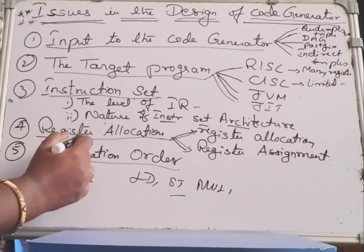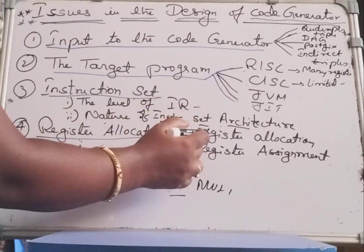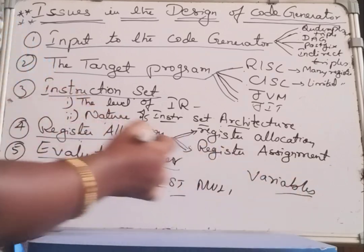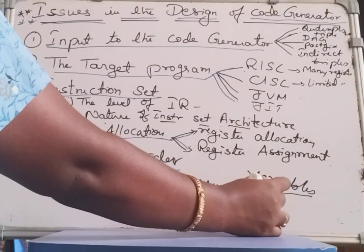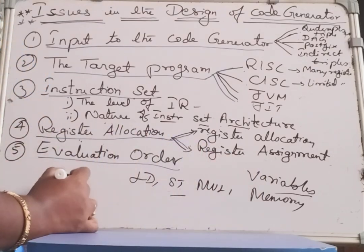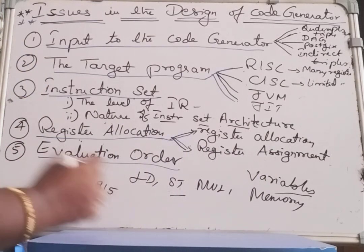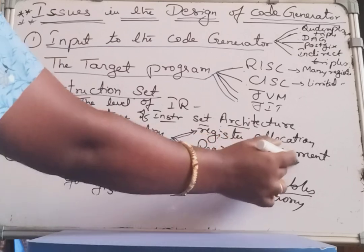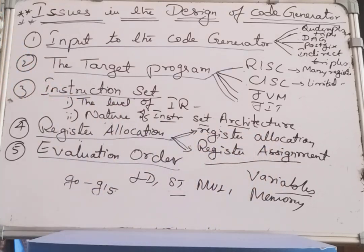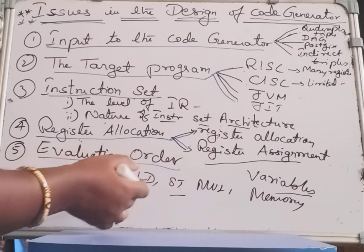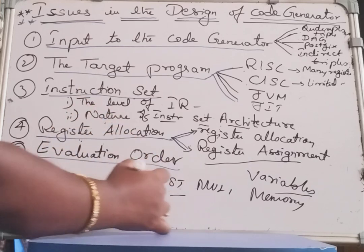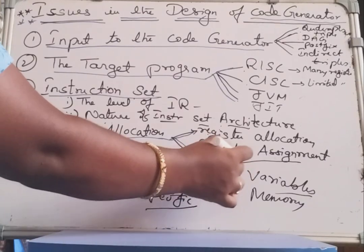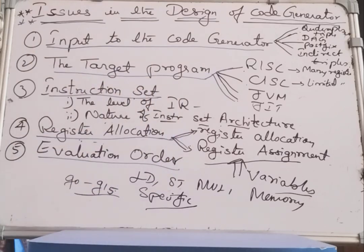The fourth issue is register allocation. How do we allocate the registers? Whether the registers have to be allocated to variables or to variables stored in memory. The CPU has general purpose processing registers, from R1 to R15. What kind of registers have to be allocated for each instruction, and what registers have to be assigned to store the results of variables — whether general purpose registers or specific purpose registers. This register allocation and assignment is also one of the issues to be considered.